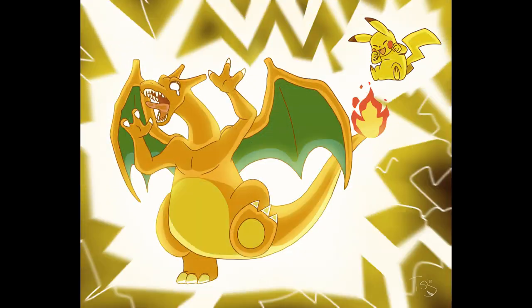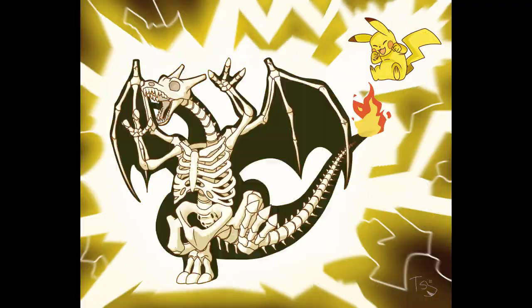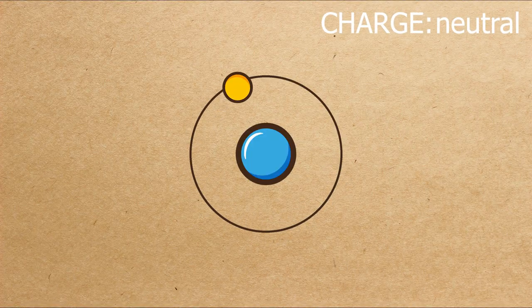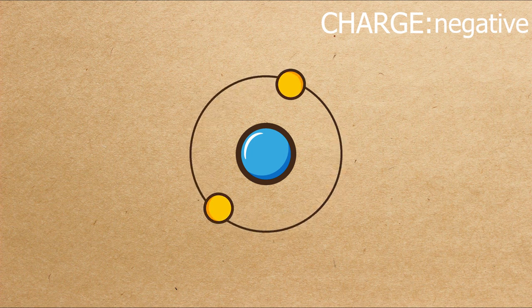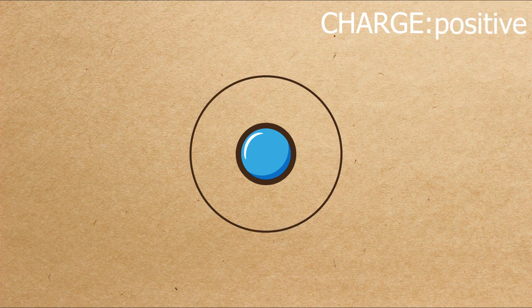Electric eels manipulate Pikachu-like stunts by controlling the flow of ions. Ions are charged atoms. When an atom loses or gains electrons, it gathers either a positive charge or a negative charge. An electron has a negative charge, so losing it will result in an overall positive charge for the atom. That's the main power eels use.